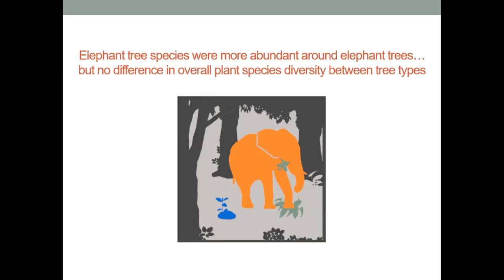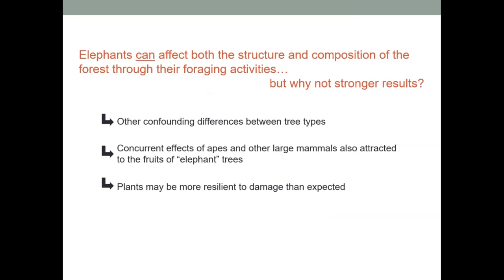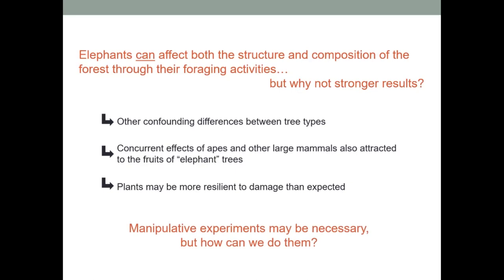In summary, we found elephants can affect structure and composition of the forest through their foraging activities. But why didn't we have stronger results? There are other confounding differences between tree types we didn't measure. There are concurrent effects of apes and other large animals — we considered these elephant trees, but a lot of other animals are eating those fruits too, so we can't isolate the effects just of elephants. And lastly, these plants are probably a lot more resilient to damage than we expected — damage on artificial seedlings and plant plots didn't necessarily translate to changes in seedling and sapling density or changes to forest structure.